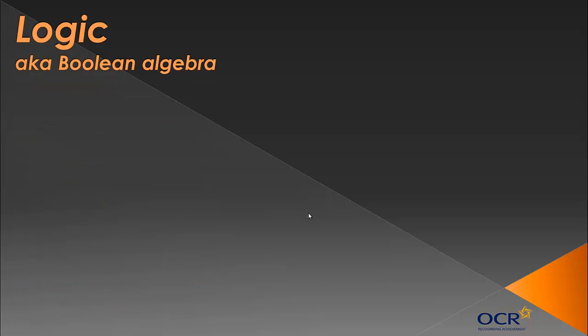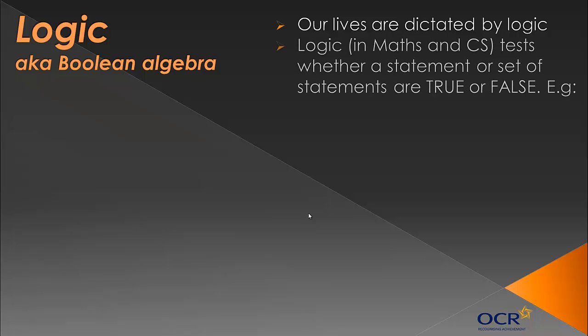So we're looking at logic gates today. We're looking at what logic is. Logic is basically Boolean algebra. Boolean is either true or false, as you may have done if you've coded languages such as Python or all programming languages. The spec doesn't require you to know much about Boolean yet. Logic tests whether a statement or set of statements are true or false. And the Boolean values are true or false, and they're represented by 0s and 1s.